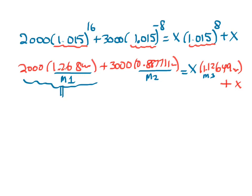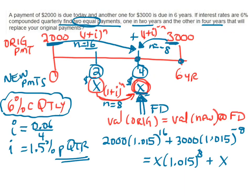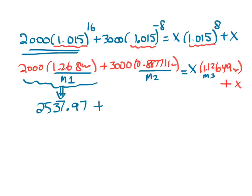Now let's solve these numbers. $2,000 multiplied by the number in memory one gives us $2,537.97. So at year four, that $2,000 will be worth $2,537.97. Plus I'm going to add the second number, $3,000 discounted, which is $2,663.13. Store the first number in memory one, store this in memory two.